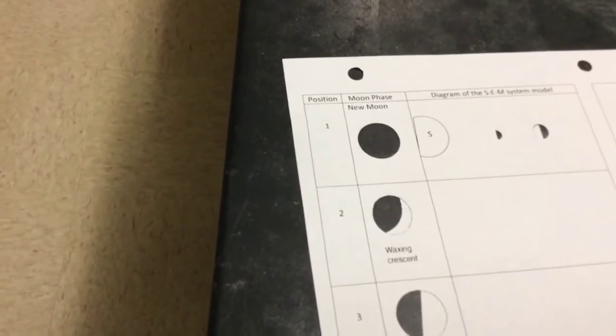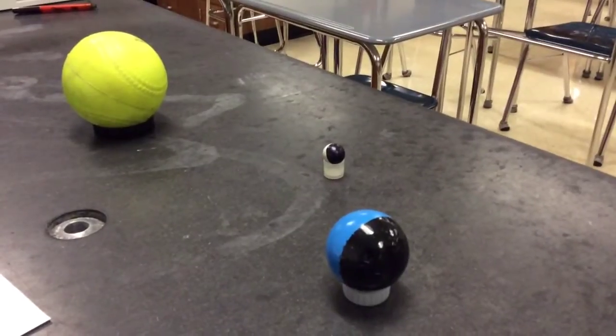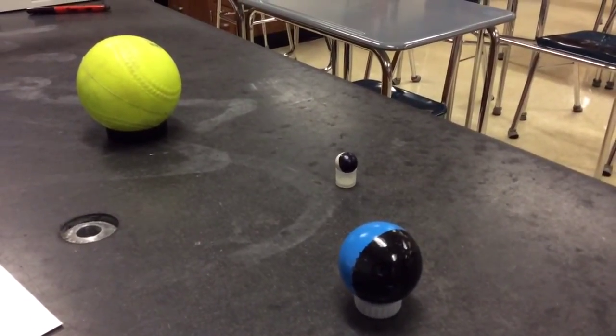But when we look here at our diagram, the crescent is on the right. So we've got the right idea here, but we're not quite right on what side that crescent shows up.